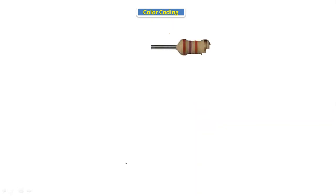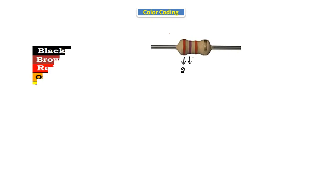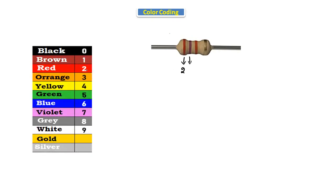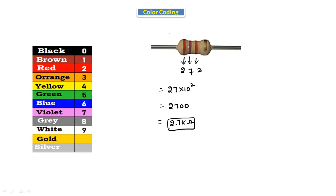These are resistors we use in our lab. This resistor has three color bands: red, violet, and red. Red indicates 2, violet indicates 7, and red is the multiplier 10^2. Applying the formula: 27 × 10^2 = 2700 ohms, which is 2.7 kilo ohms. Any resistor with red, violet, red bands has a value of 2.7 kilo ohms.